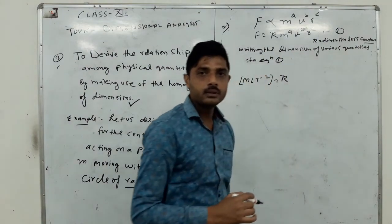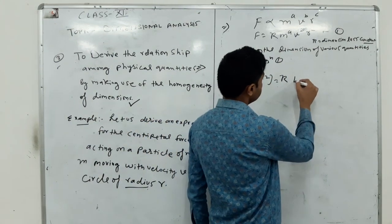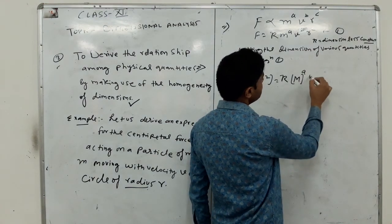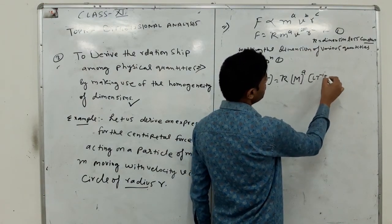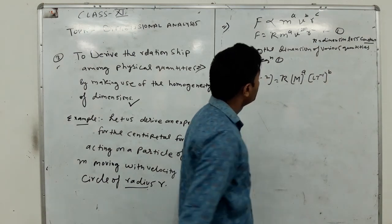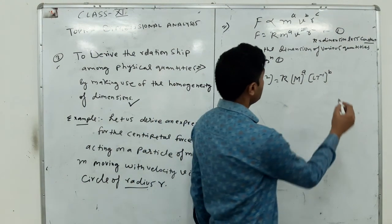The dimension of mass is M. Dimension of velocity is LT^-1 and dimension of radius is L.